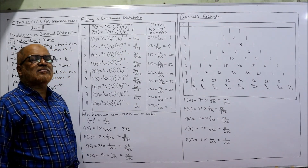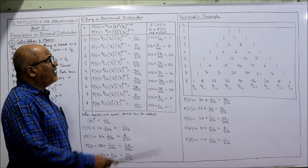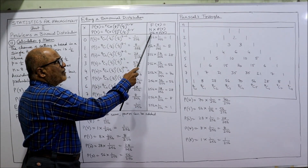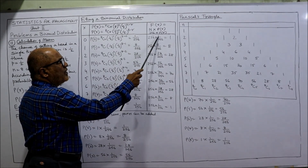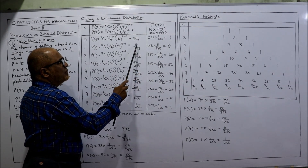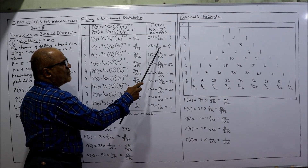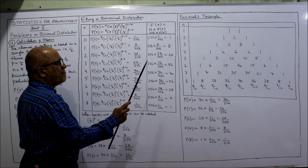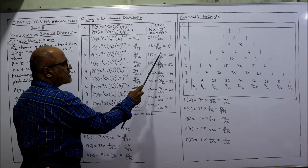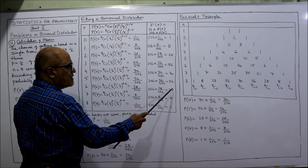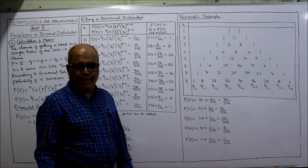Now to get the expected frequencies we compute N × P(R), where N = 256. So 256 × 1/256 = 1; 256 × 8/256 = 8; 256 × 28/256 = 28; 256 × 56/256 = 56; 256 × 70/256 = 70; then 56, 28, 8, 1 for the remaining values. These are the expected frequencies. That's all — this is the end of the 11th problem.